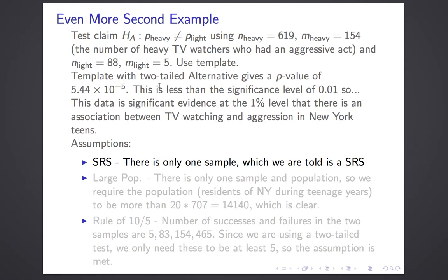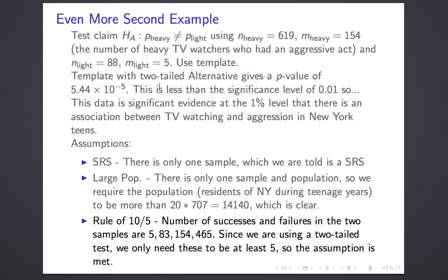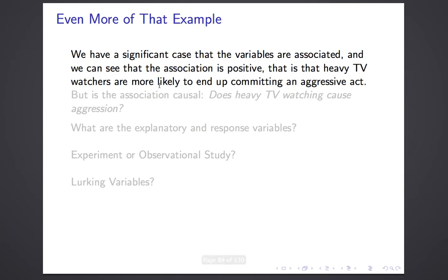Checking assumptions: there's only one sample, and we're told it's a simple random sample — met. The population needs to be at least 20 times the total sample size of 707, so at least 14,000 New York teenagers — that seems clear. For the rule of 10 or 5: since we're doing a hypothesis test with the two-tailed alternative, we only need 5. The four numbers (successes and failures in each group) are all at least 5 — just barely, with 5 in one category. Assumptions met.